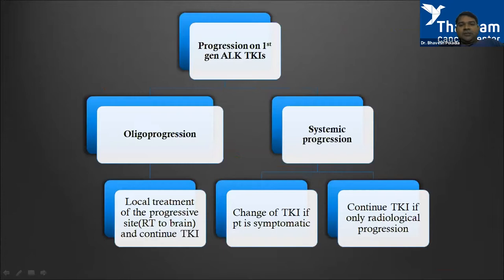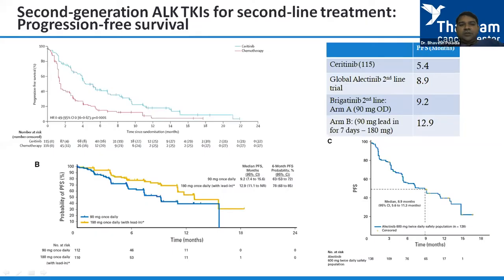Once a patient starts progressing on first-line therapy, there are two types of progression. Oligoprogression: local treatment is given and the same TKI is continued. Systemic progression: the TKI is changed if the patient is very symptomatic, though TKI can be continued if progression is only radiological and not troublesome. In the second line, multiple drugs are available — ceritinib, alectinib, brigatinib — and we can see their PFS comparison.